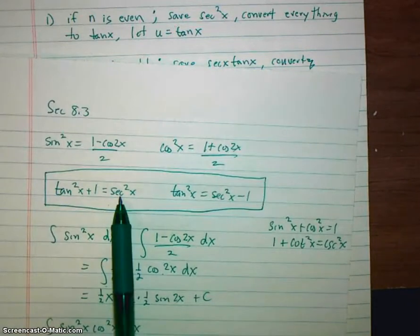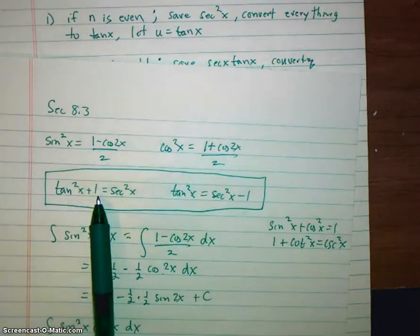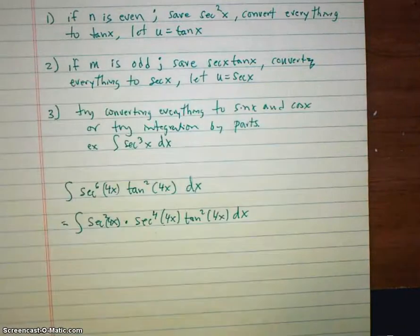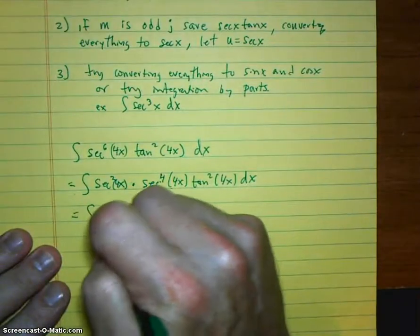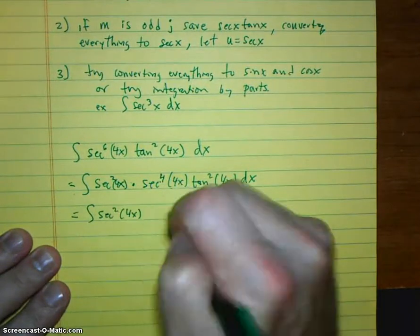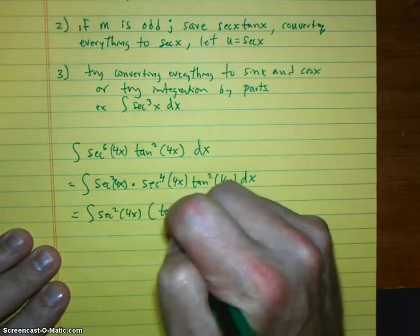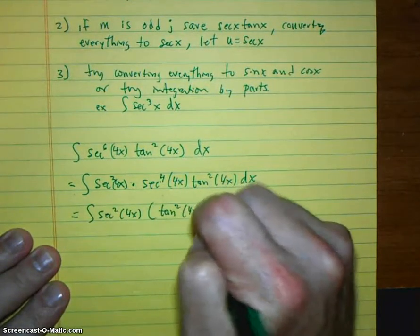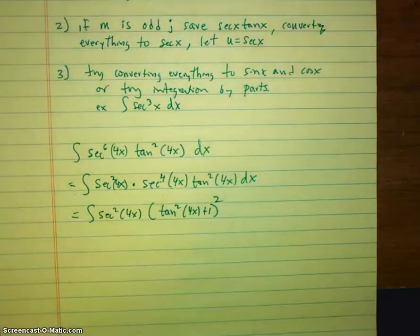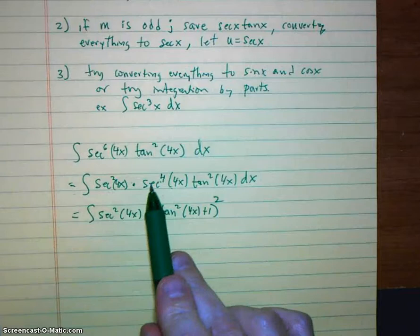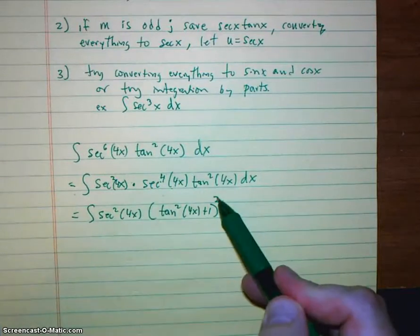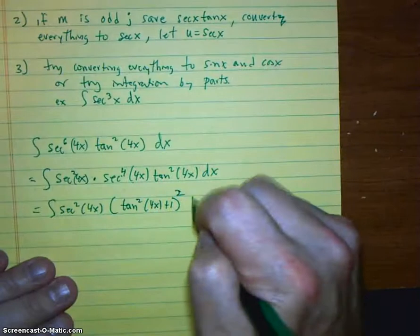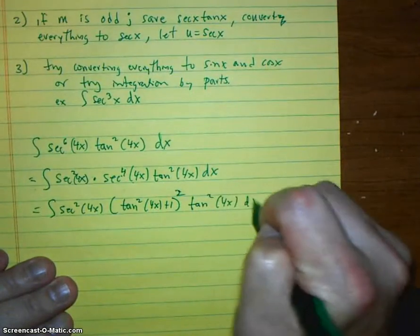Secant squared is tangent squared plus 1. But since I have a fourth power there, I'm actually going to have the integral of secant squared 4x. Then I'll have tangent squared 4x plus 1. And that whole thing will be squared. This is secant to the fourth of secant squared squared. So here's my secant squared. And then I'm squaring it again. And then I've got tangent squared of 4x dx.